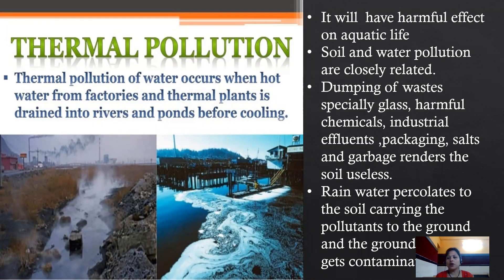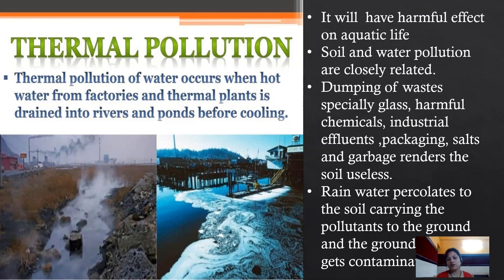Thermal pollution of water occurs when hot water from factories and thermal plants is directly drained into rivers and ponds before cooling. As it is very hot, it affects aquatic life greatly. Soil and water pollution are closely related — if this polluted water is used for irrigation, then the land and soil also get affected.